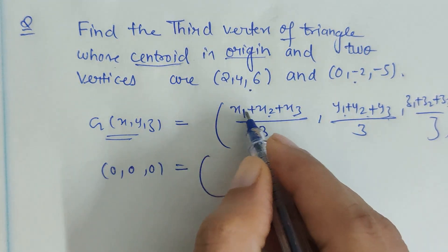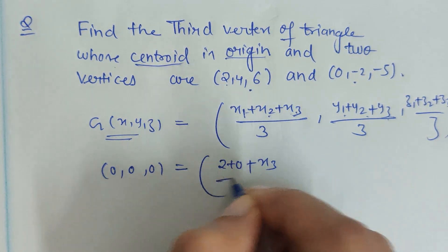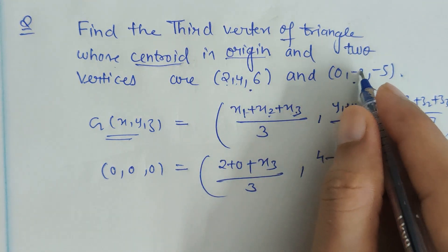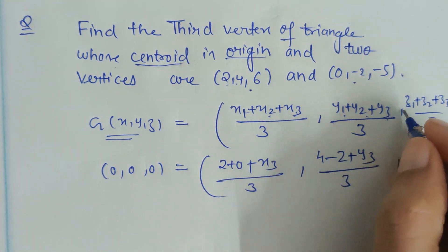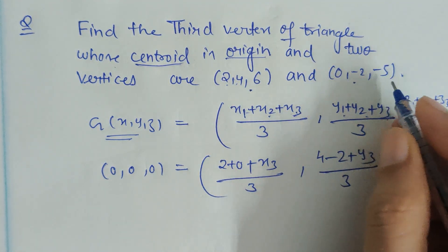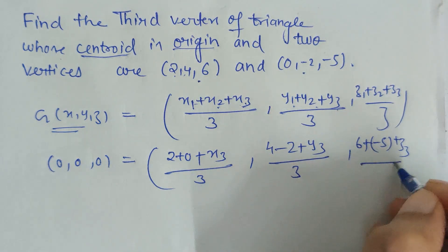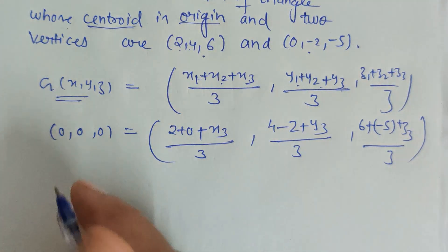This equals (x1+x2+x3)/3, so (2+0+x3)/3. Then y1 is 4 and y2 is -2 plus y3 over 3. z1 is 6 plus z2 is -5 and z3 over 3. Now it's a mere simple calculation.